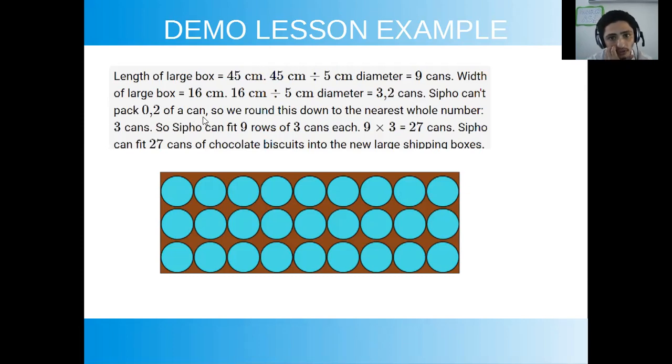So it's very important to realize that the 0.2 there is a can that can't fit in there. So you need to round down to make sure that all the cans fit. So Sipho can fit 9 rows and 3 cans each. 9 times 3 gives you 27 cans. Sipho can fit 27 cans of chocolate biscuits into the new large shipping boxes.